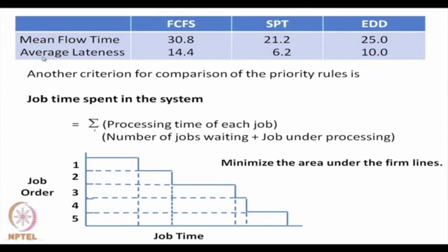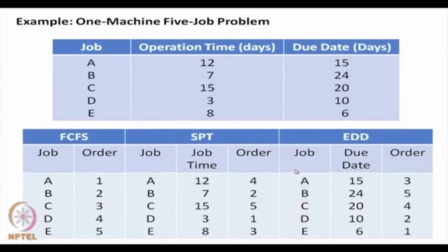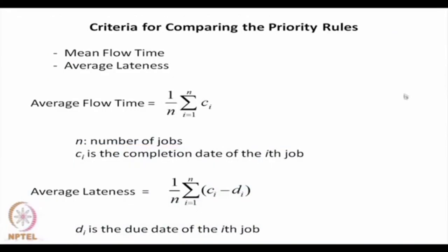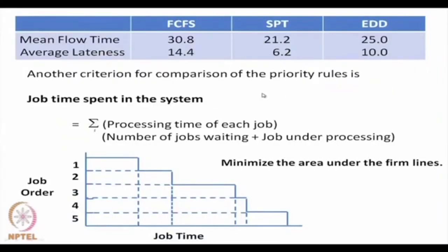If we follow average lateness as the criterion — recall average lateness is the completion time minus the due date, averaged — using the completion times and due date values, I calculated the average lateness for the 3 priority rules. The shortest processing time also gives the least average lateness value of 6.2. So following both criteria, the shortest processing time is the best priority rule to follow.